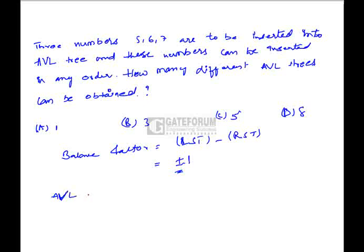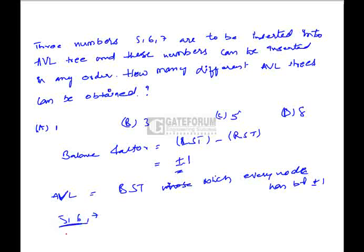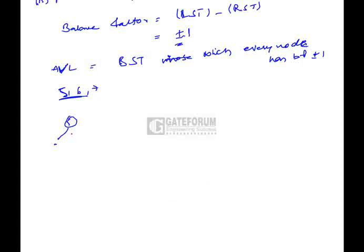An AVL tree is a binary search tree in which every node has a balance factor of plus or minus 1. The given numbers are 5, 6, 7. Let us construct different binary search trees with these numbers. One possibility is the tree 5, 6, 7, where elements greater than the root should be in the right subtree. This gives us one possibility, and here is another possibility, and one more possibility.